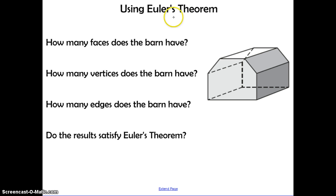Using Euler's Theorem, we want to talk about how many faces this barn has. So we count the front and the back, and then all around the sides, and we get a total of 8 faces.